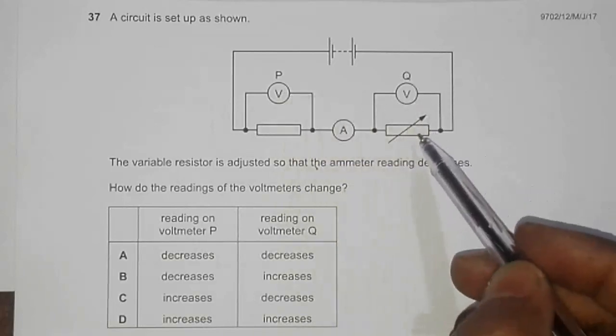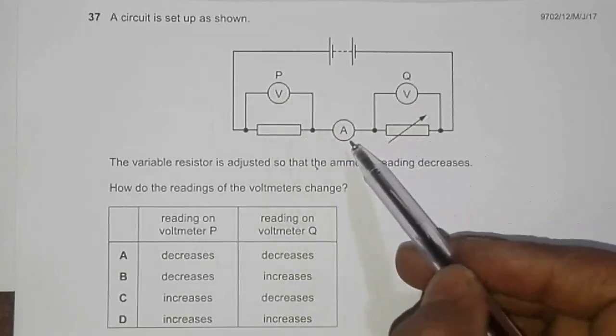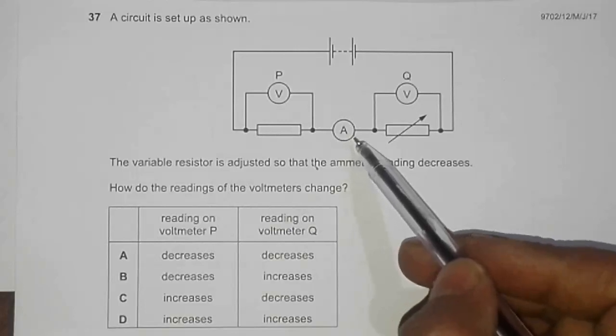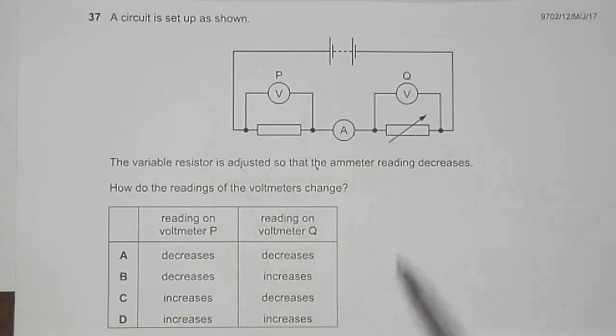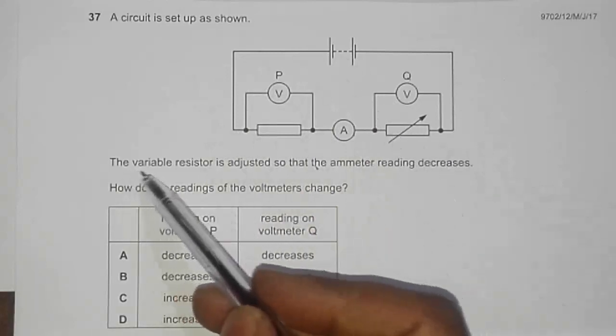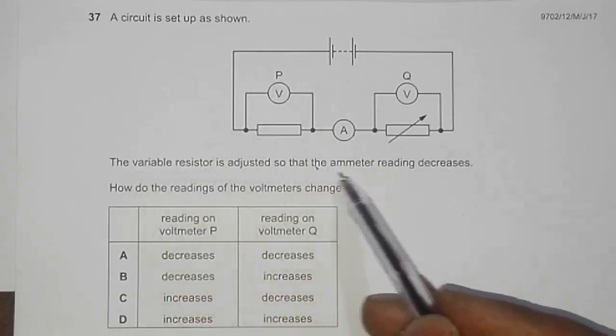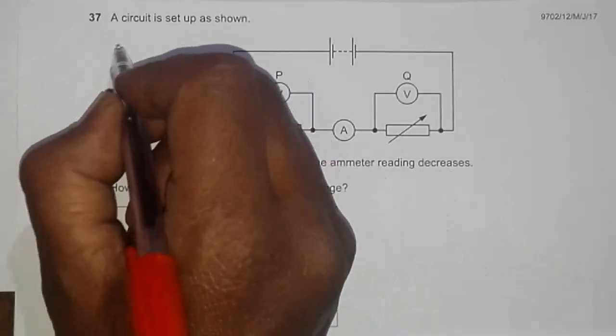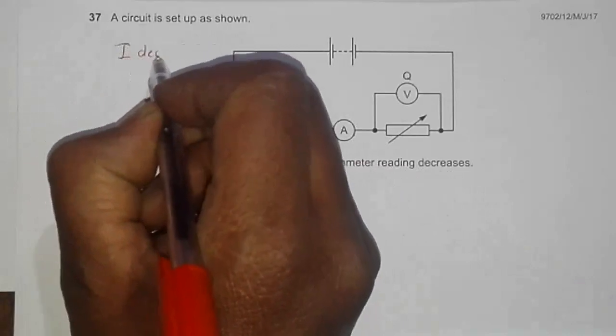We have an ammeter in series with the circuit. The variable resistor is adjusted so that the ammeter reading decreases, which means the current I decreases.